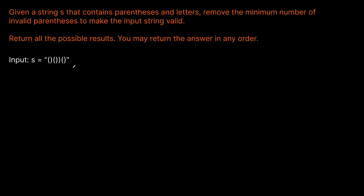Let's look at an example. Say we're given this input — what would our solution be? Let's count the parentheses. For the left we have three left parentheses, for the right we have four. There's a mismatch, so obviously we can't remove left parentheses — that would only make things worse. The right parentheses are the ones we need to remove. There's one right parenthesis that is invalid because it doesn't have a corresponding left parenthesis.